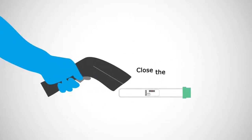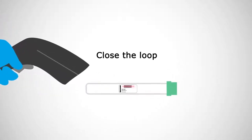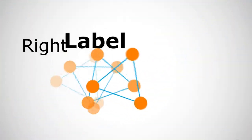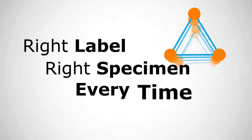MobileLab closes the specimen collection loop by requiring the user to scan the barcoded label after it's been applied to the collected specimen. This means the right label on the right specimen every time.